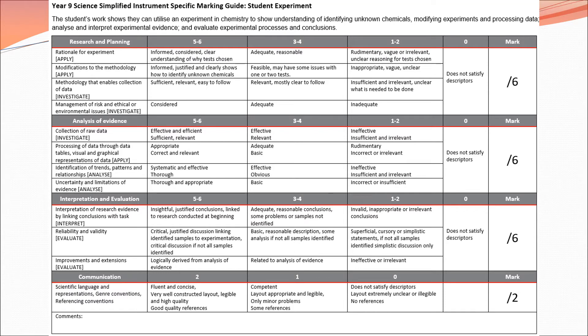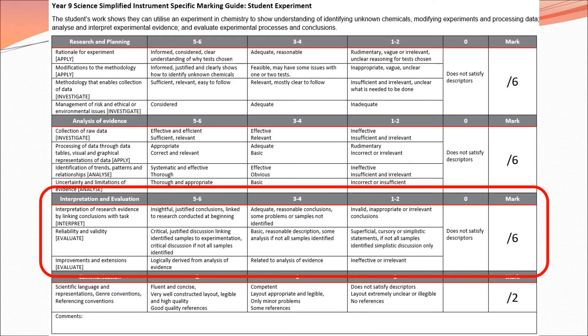Back to our marking guide again, our rubric, our ISMG as we call it in Senior, Instrument Specific Marking Guide. And today we're looking at interpretation and evaluation. And like last time, we've got our three main categories. You either get this many marks, this many marks, this many marks. Hopefully, you don't end up down there to get your mark out of six for this section, which all adds up to out of 20 for everything.